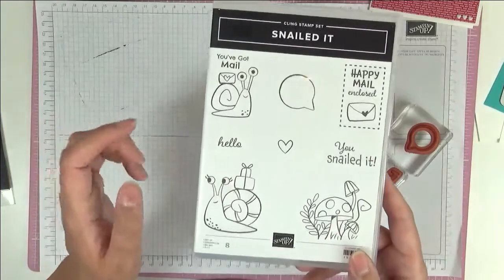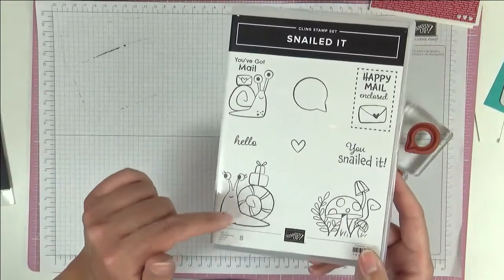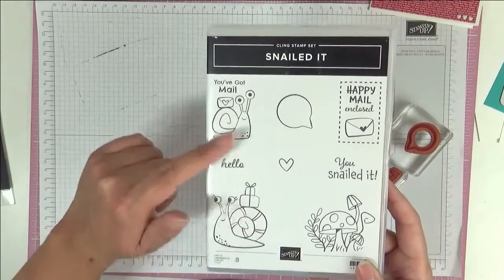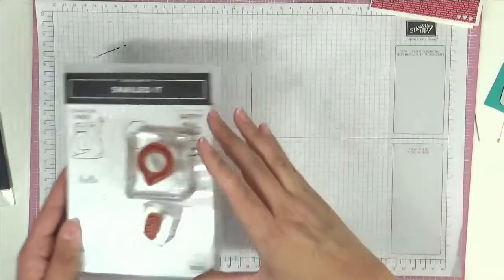We used the speech bubble and the little hello but you can equally stamp out these snails. These snails are also on the designer series paper and the dies will cut them on the paper and here on the stamp set. So really cool.